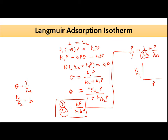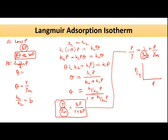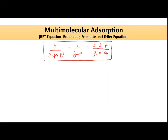This Langmuir equation does not hold very true at very low pressure and when pressure approaches saturation. At very low pressure, when b·p is not significant, theta will be equal to b·p only. At very high pressure (saturation pressure), since p is very high, theta will be approximately equal to 1 because we can neglect the 1 in the denominator.